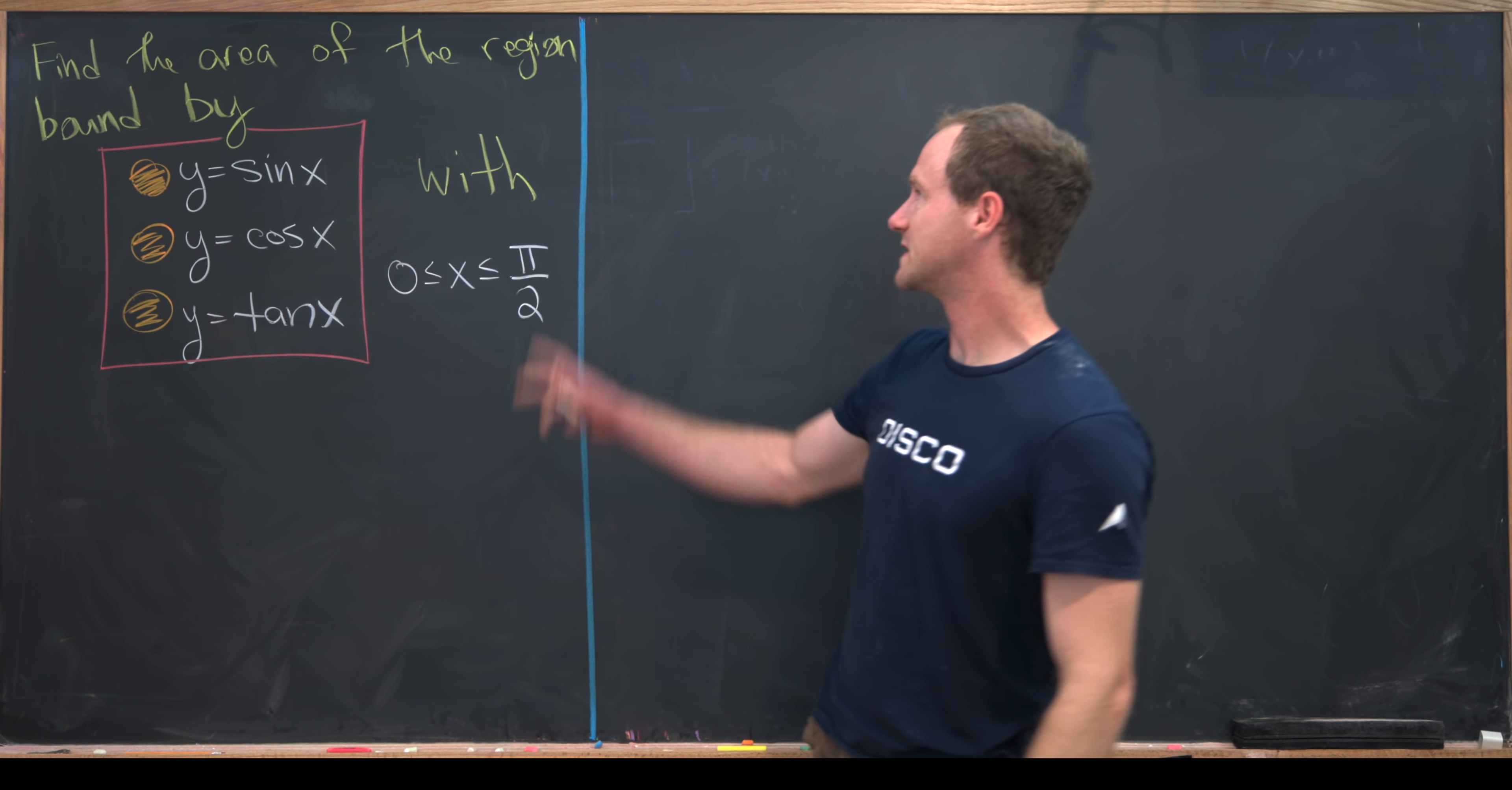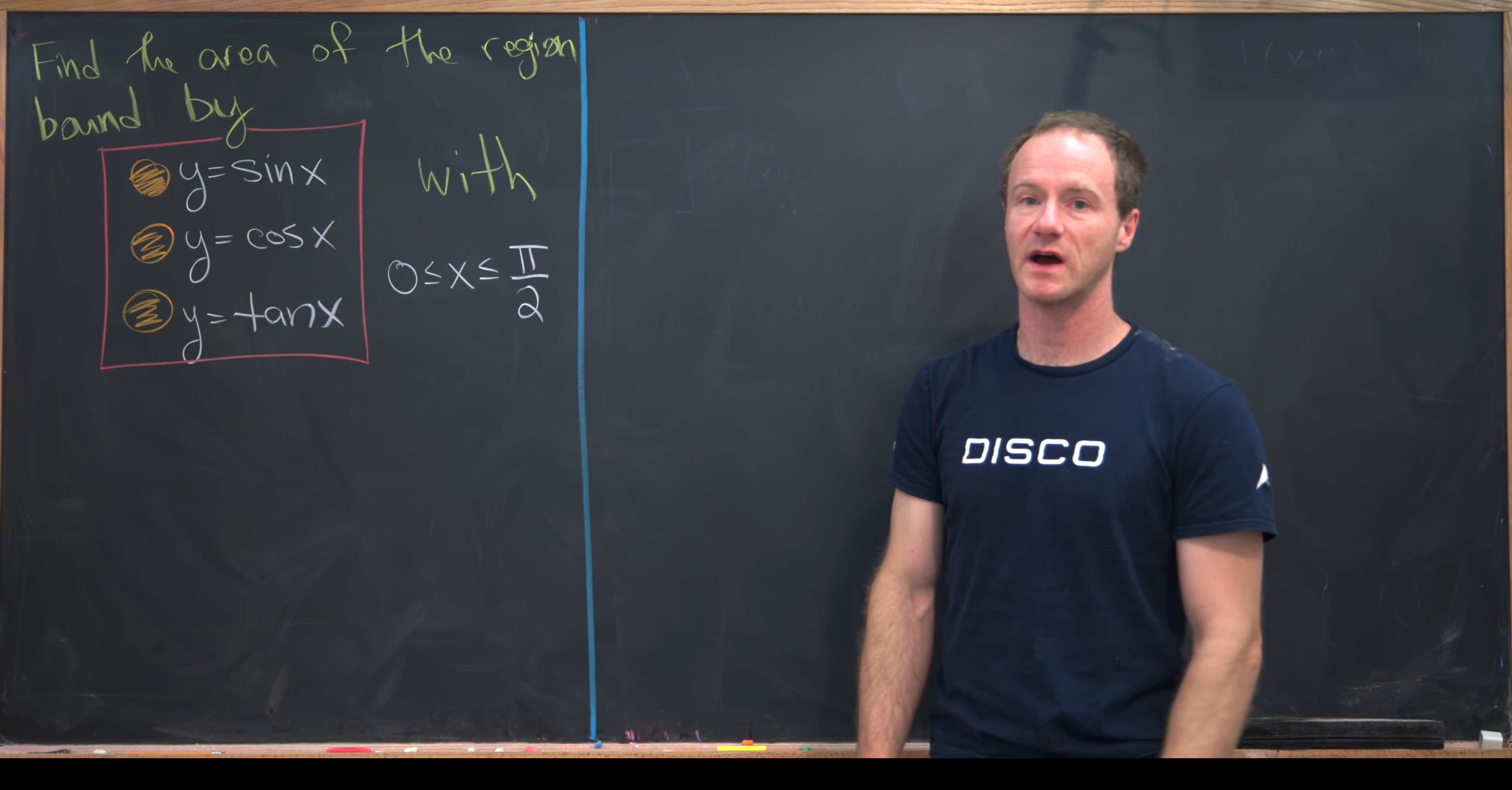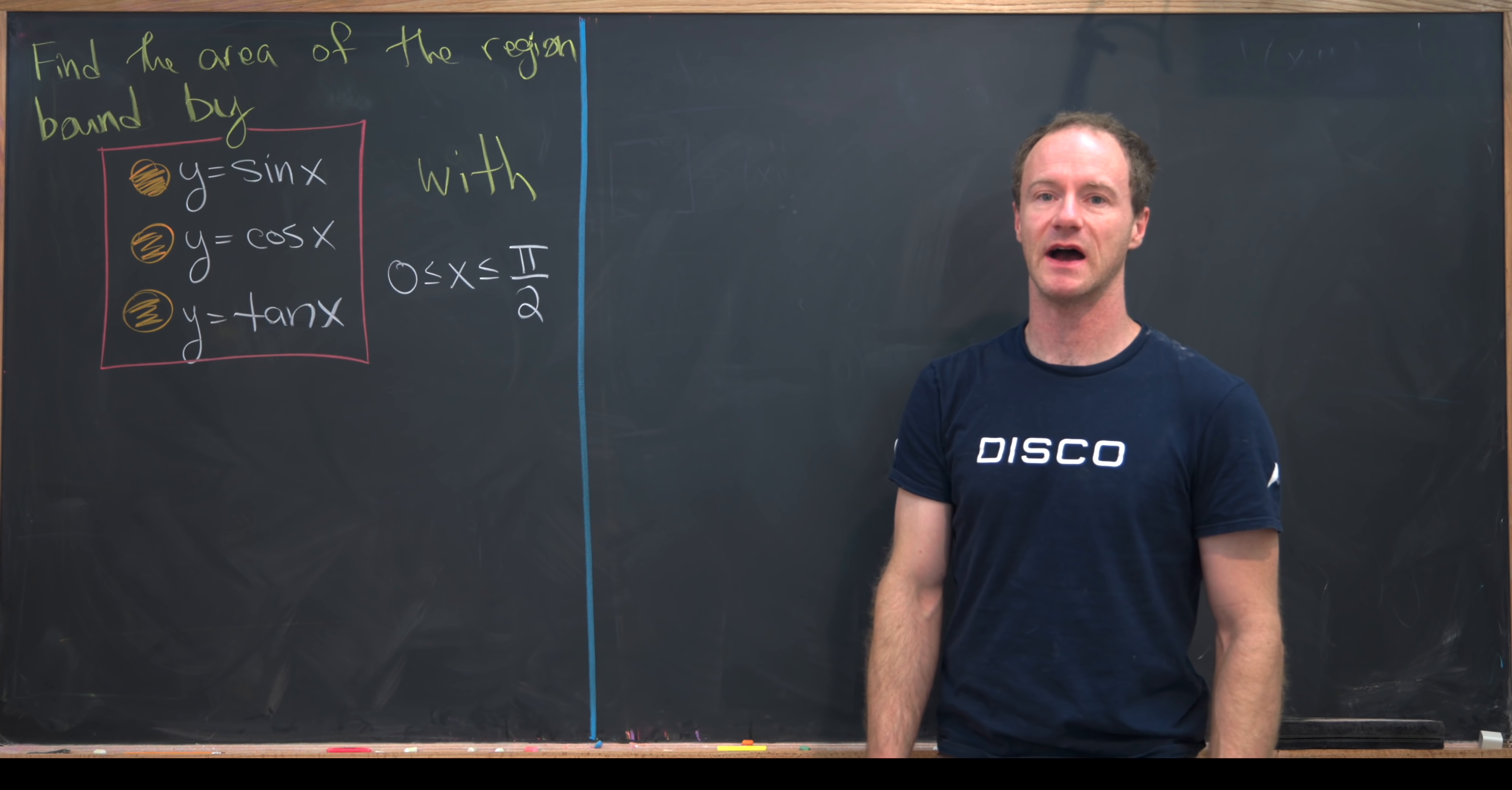Our goal is to find the area of the region bounded by the following three trigonometric functions: y equals sine x, y equals cosine x, and y equals tangent x, or I should say the graphs of these trigonometric functions. Furthermore, we want to impose the constraint that x is between 0 and pi over 2.